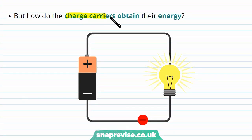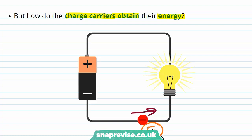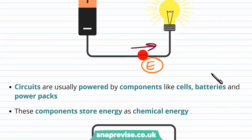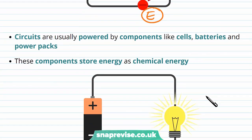But how do these charge carriers actually obtain that energy? We know they have some energy since they do work when they pass through the light bulb, which provides the light bulb with energy to create light energy and heat energy. But how do the charge carriers themselves get the energy? This charge carrier is moving around the circuit and it has a certain value of energy E, and we want to find out where it comes from.